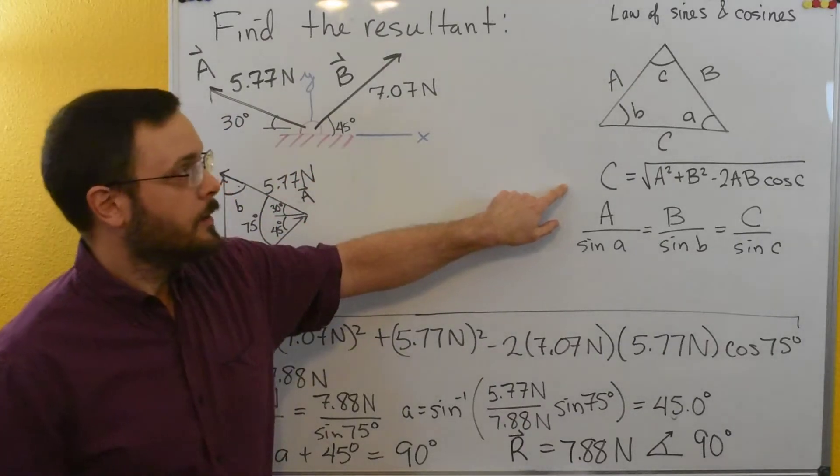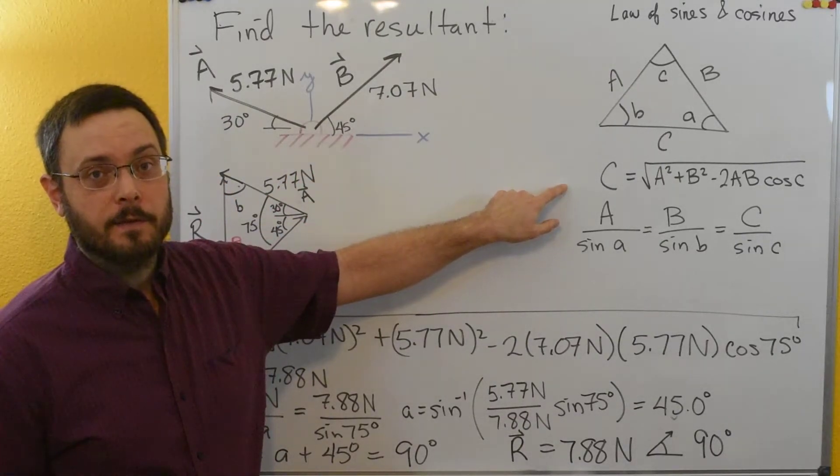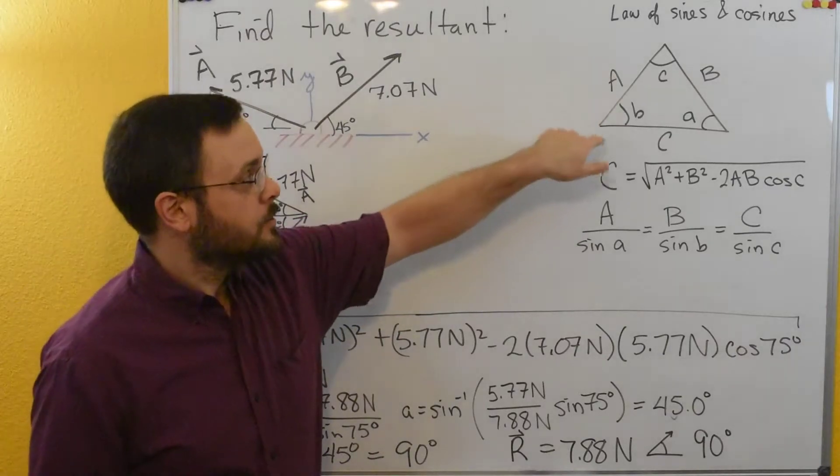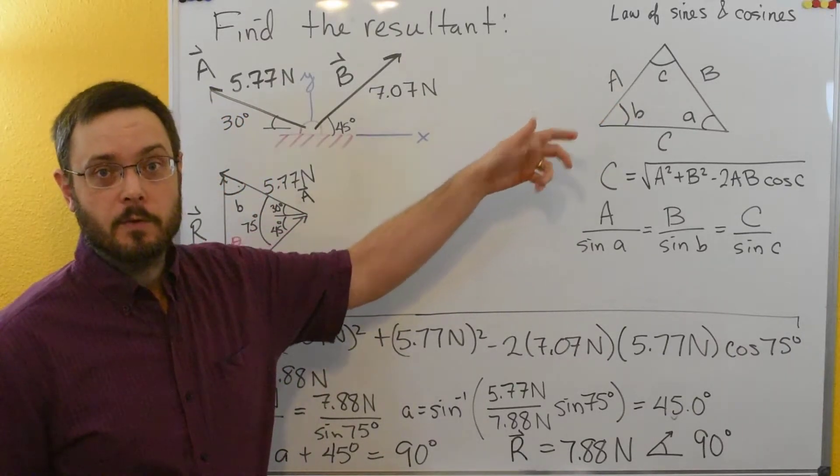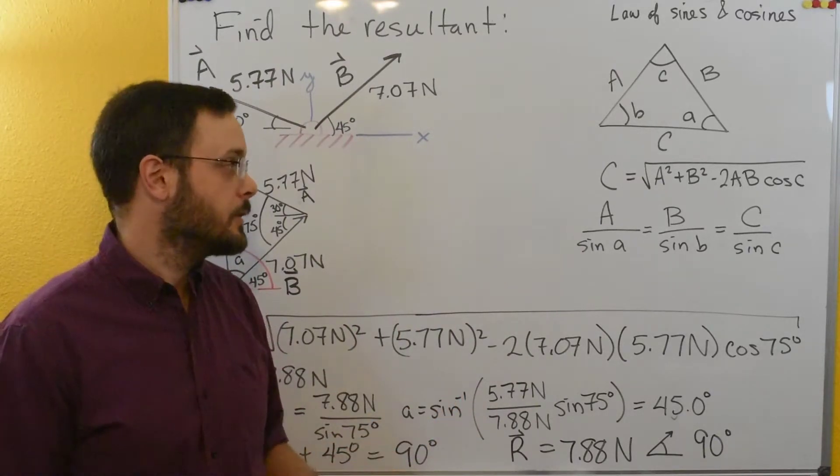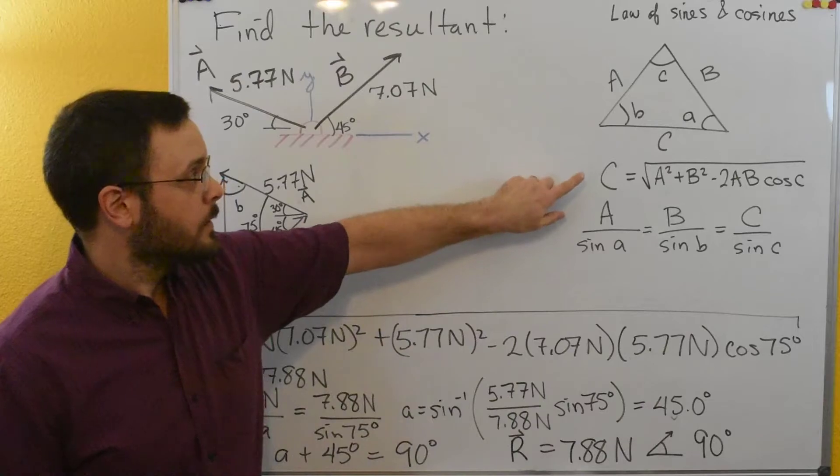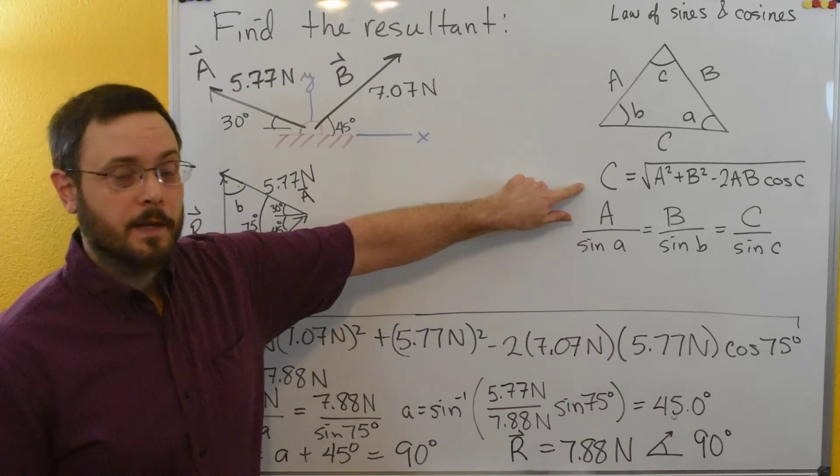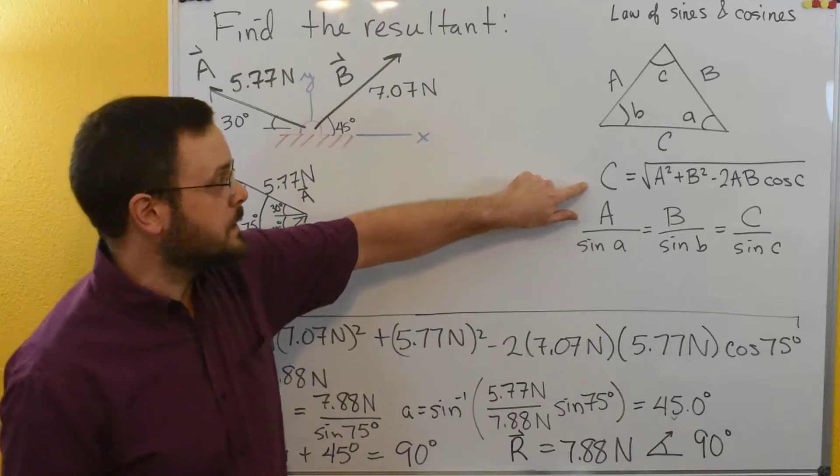If you're a little rusty on the law of cosines and the law of sines, here's the generic triangle for law of sines and law of cosines. Remember this is for solving triangles that are not necessarily right triangles. And we can do this by solving for any side.